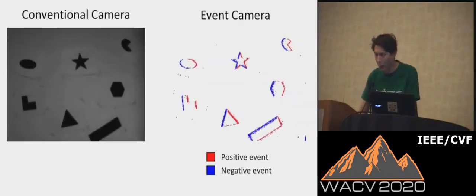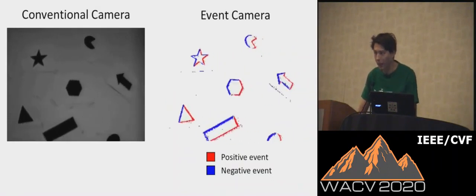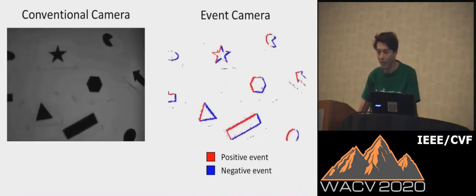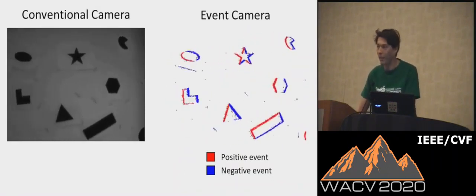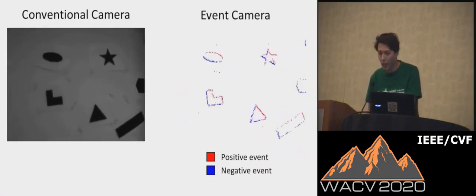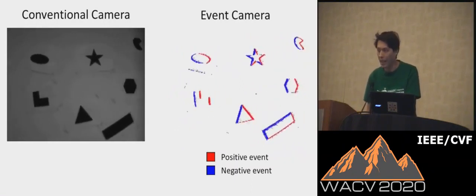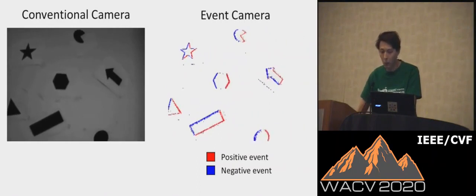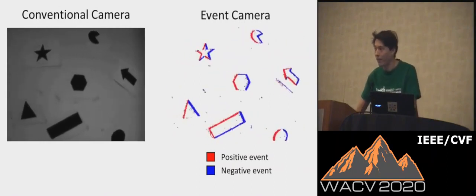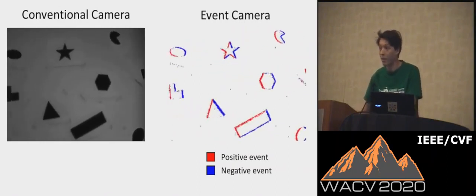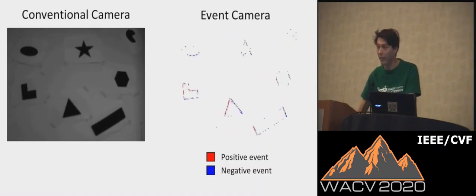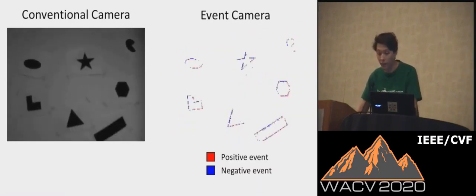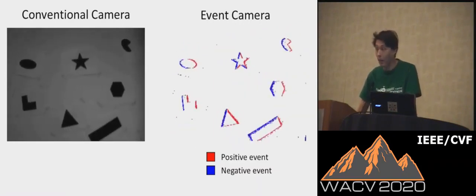First I'll explain what is an event camera. On the left you see a normal frame-based camera, and on the right the output of the event camera. The event camera only outputs brightness changes. So when the brightness increases, it will output a positive event, and if the brightness decreases, you'll get a negative event. And at the pixels where the brightness is constant, there are no events.